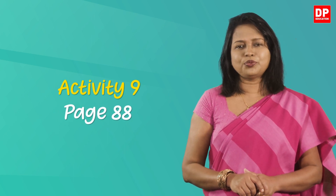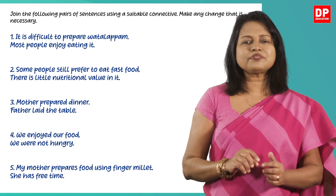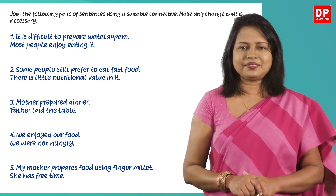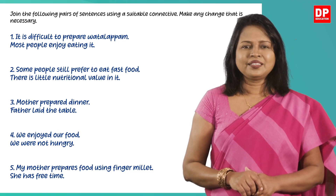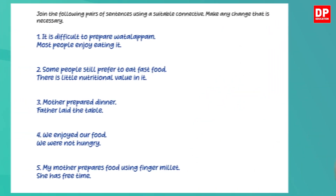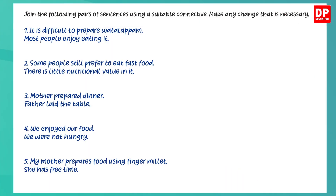Let's do another activity. This is Activity 9 on page 88 of your textbook. This time you have to join the pairs of sentences using a suitable connective, and you can make any change that is necessary. Pause the video and do it now. Let's check your answers. The first set of sentences presents contrasting ideas, so you can link them using 'though', 'although', or 'even though'.